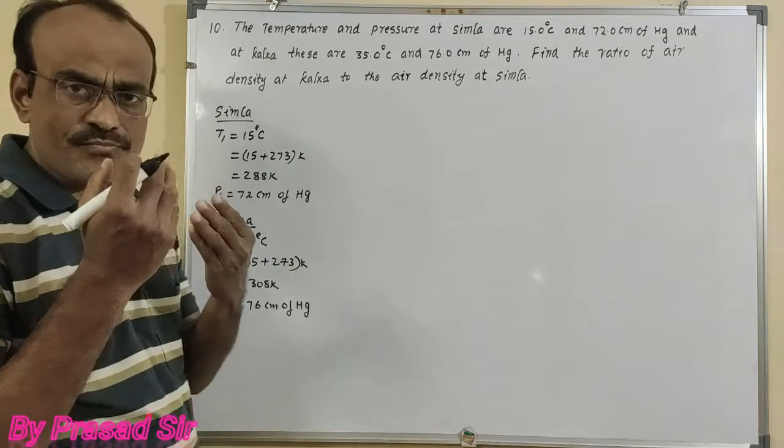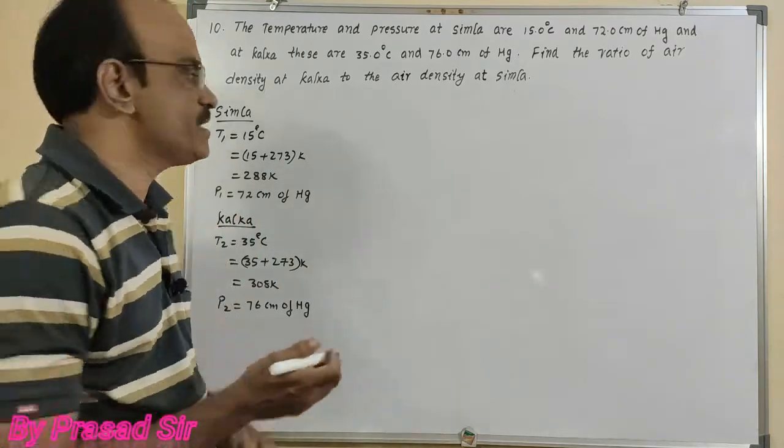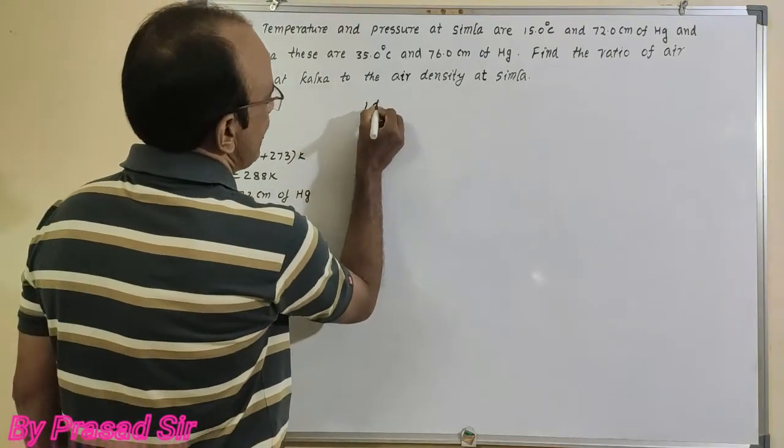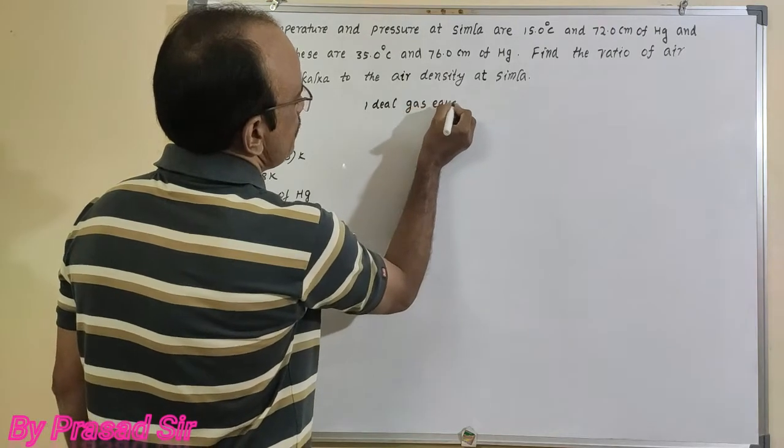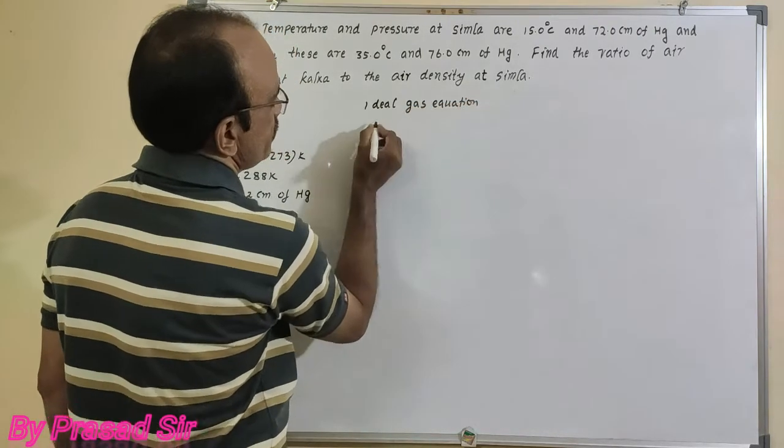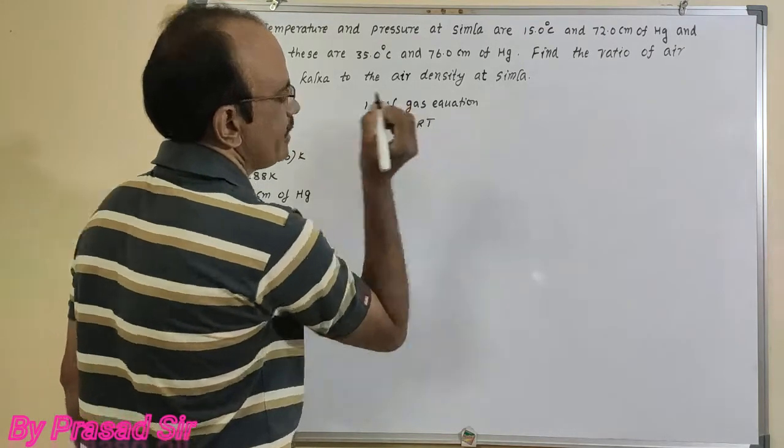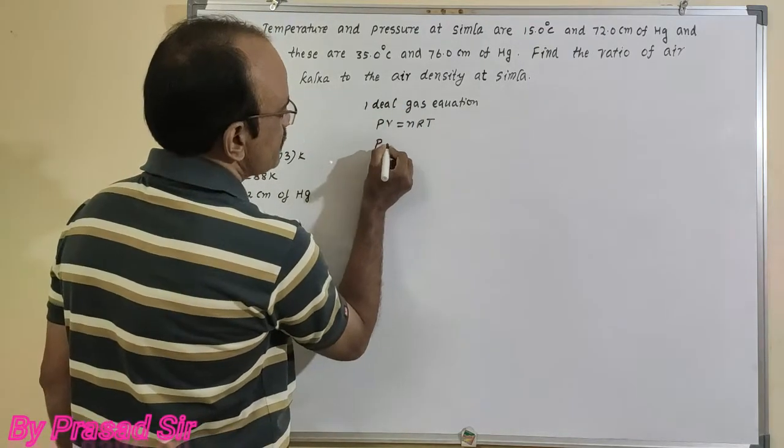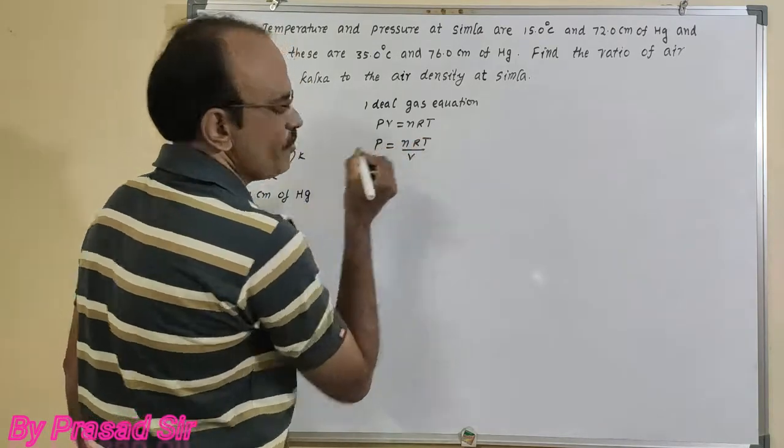Now to find the ratio of air densities, first I'll take the ideal gas equation. In the ideal gas equation, PV equals nRT. I will write this as P equals nRT divided by volume.